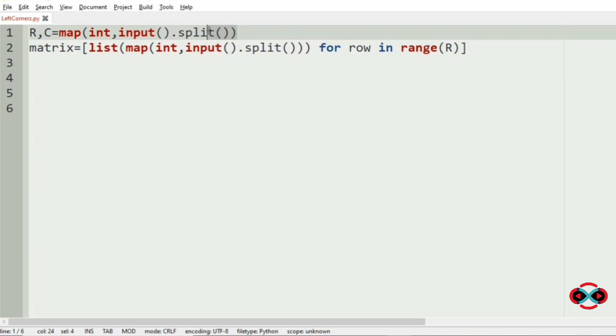Let us implement our program. First we are getting the inputs, the number of rows and columns. Then our matrix using the list comprehension.